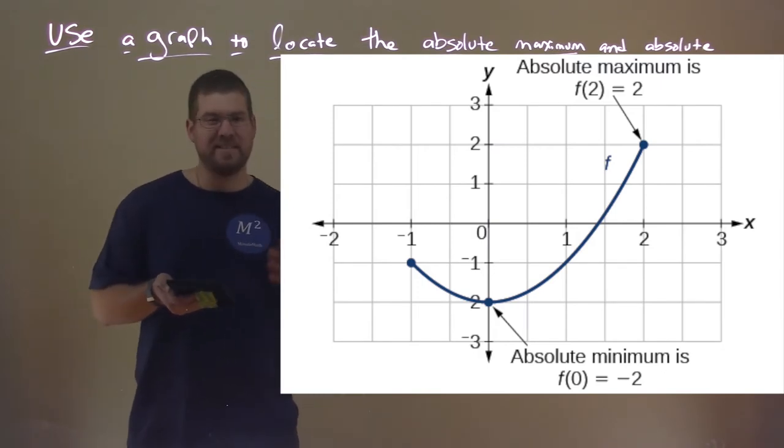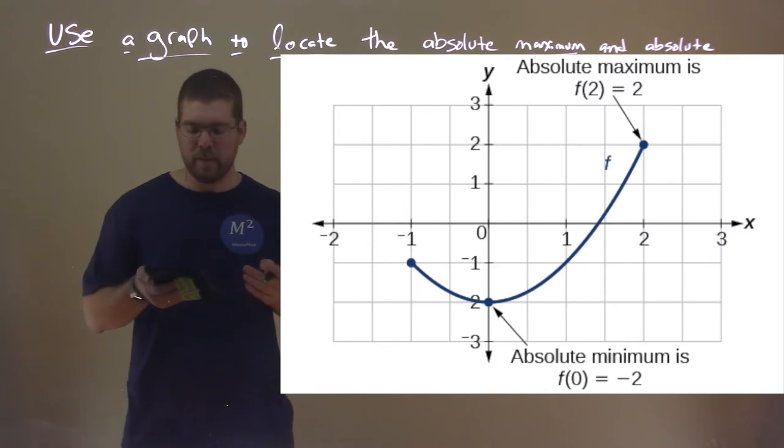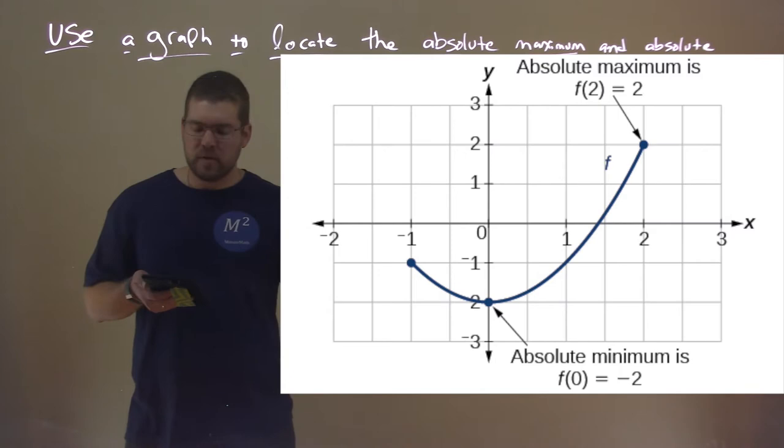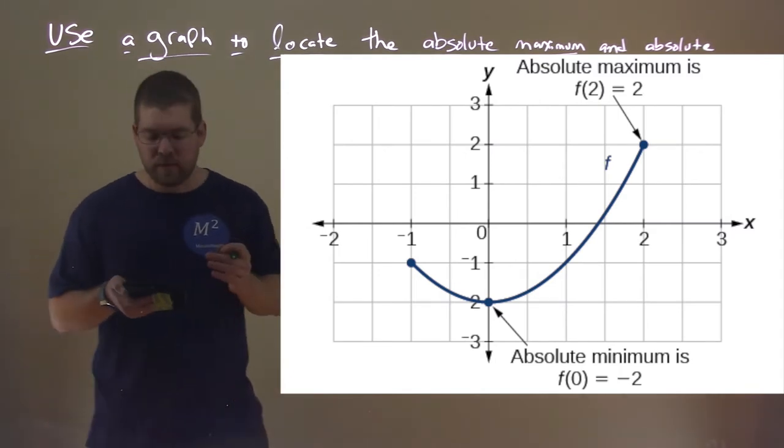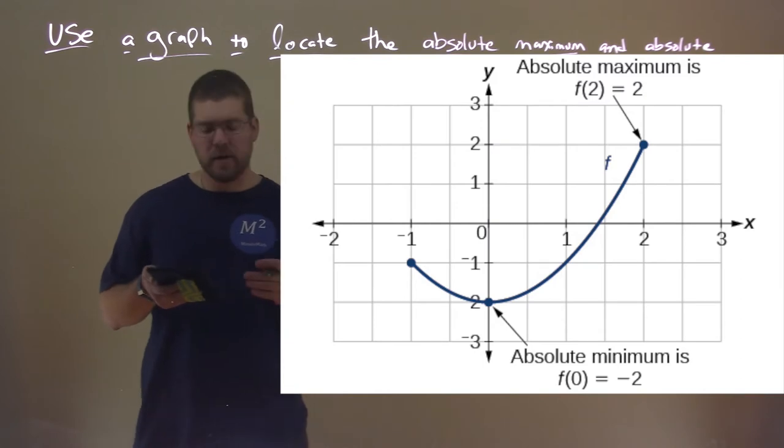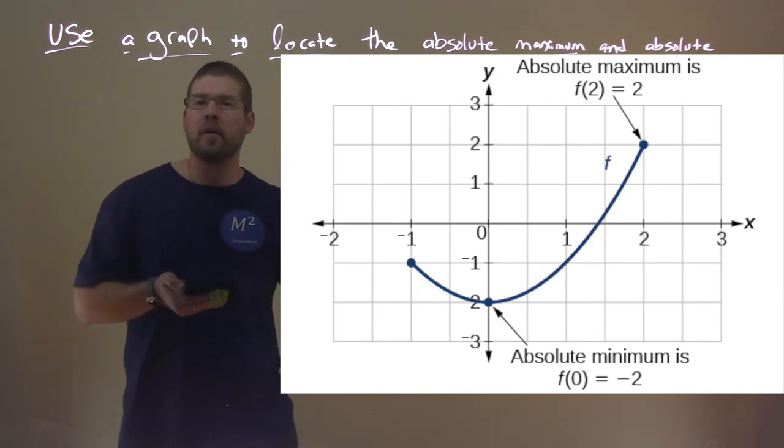That point, it's actually also a local minimum as well. But notice here, we would have no local maximum. So we have an absolute maximum at f of 2 equals 2. So the x value is 2, we have a y value of 2, and that is the absolute highest value on this graph.